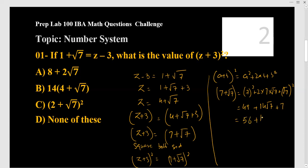So this is the final level that IBA asks commonly. So you can factor out the common 14: 49 + 7 + 14√7 = 56 + 14√7 = 14(4 + √7). So here, option B is the right option.